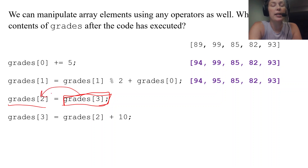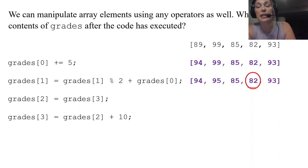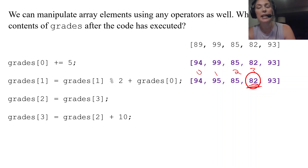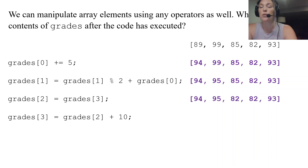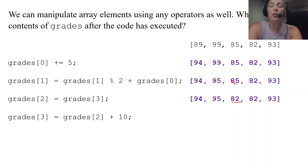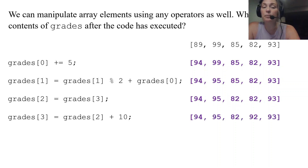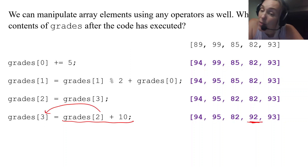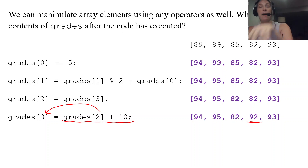Continuing the example: index three holds a value, grades[2] is replaced with 82. Then grades[3] = grades[2] + 10 — 82 plus 10 is 92, so index three becomes 92. Those are the final contents of the array after all that code has executed.